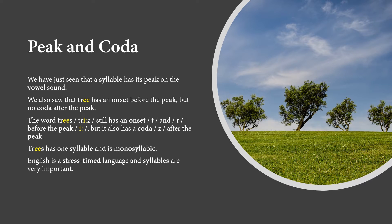Peak and Coda. We have just seen that a syllable has its peak on the vowel sound. We also saw that tree has an onset before the peak, but no coda after the peak. The word trees still has an onset T and R before the peak E, but it also has a coda Z after the peak. Trees has only one syllable and is monosyllabic.